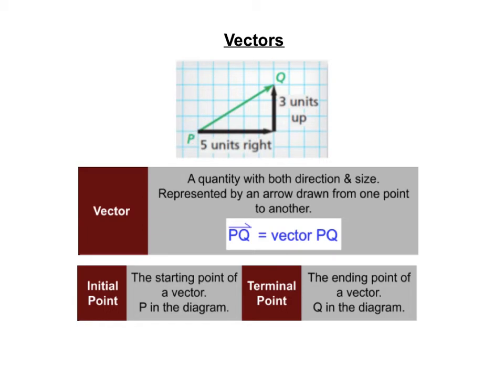The terminal point is the ending point of the vector and that's going to be the side of the vector that has the arrow pointing to it. Here it's Q in the diagram. It's important to note that vectors won't always go to the right. Sometimes your vector might move to the left, so make sure when you're finding your initial point that you're looking for the side of the vector that doesn't have the arrow on it.